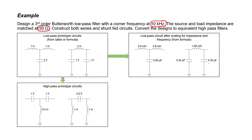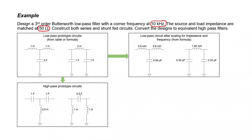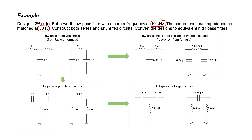What if we wanted a high-pass filter instead? The first thing we need to do is look at our low-pass prototype circuits and replace every capacitor with an inductor, and every inductor with a capacitor. We furthermore need to rescale our prototype values by taking the reciprocal. The reciprocal of 1 Henry is 1 Farad, but the reciprocal of 2 Farads is 0.5 Farads. The next step is to use the same scaling formulas to convert our prototype circuits into the actual filter, using the corner frequency of 10 kilohertz and source and load impedances of 50 Ohms. That gives us the final high-pass filter design.